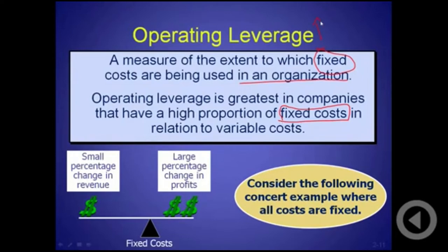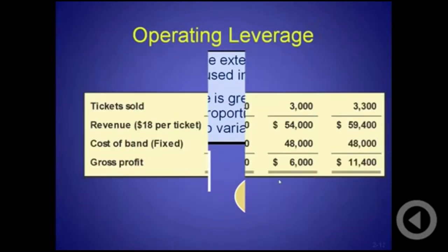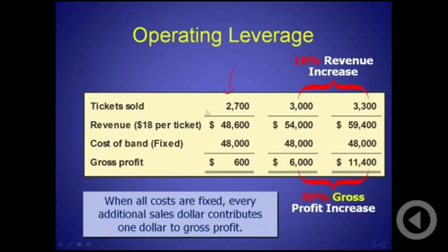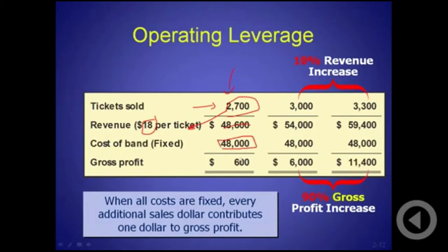You can make more profit in good years, but in not-so-good years you're going to make less profit. To illustrate this point, let's use an example. Tickets sold for a company is 2,700. Revenue is tickets sold times $18, so revenue is $48,600. The cost of the band is $48,000 — a fixed cost. What's left for gross profit? Only $600.